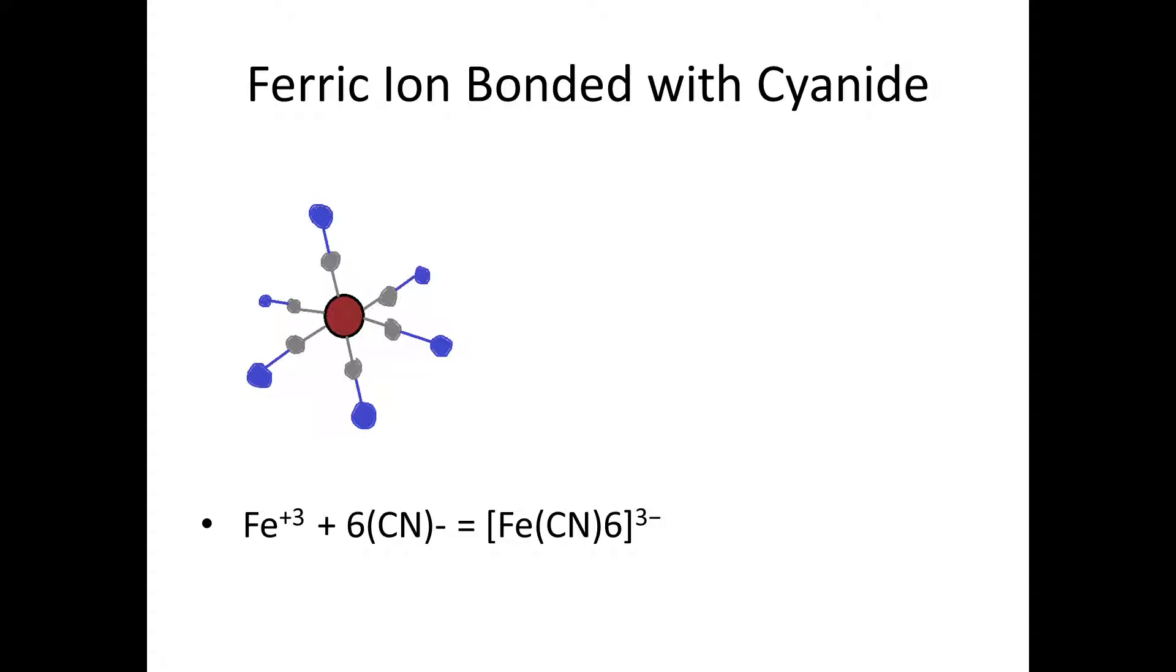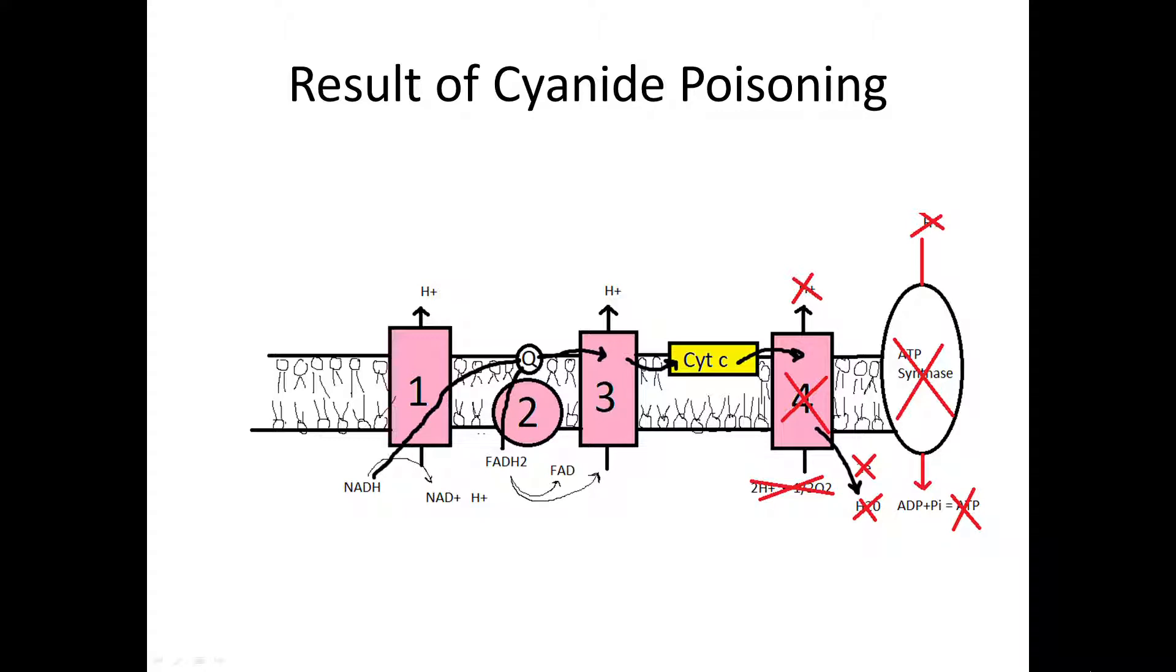This causes failure of protons to create the needed concentration gradient to power ATP synthase, which means no ATP. So there you have it, the simple coordination complex produced by a ferric ion and a carbon-nitrogen compound is enough to kill a human being within seconds of entering the bloodstream.